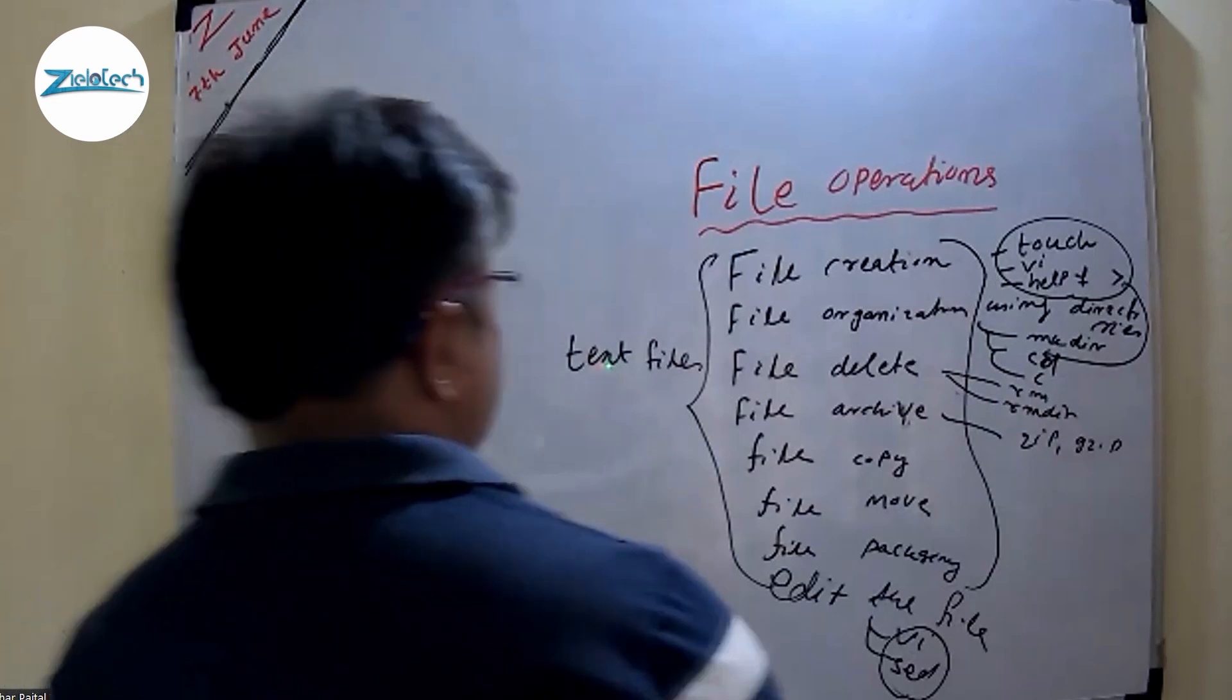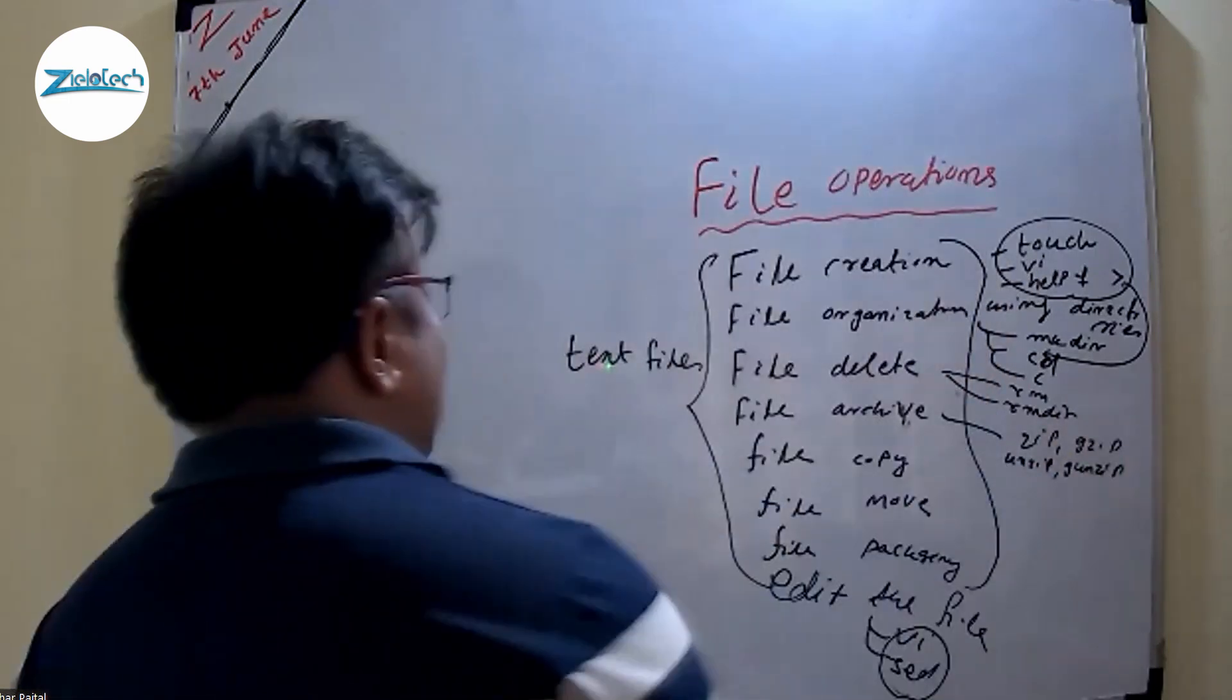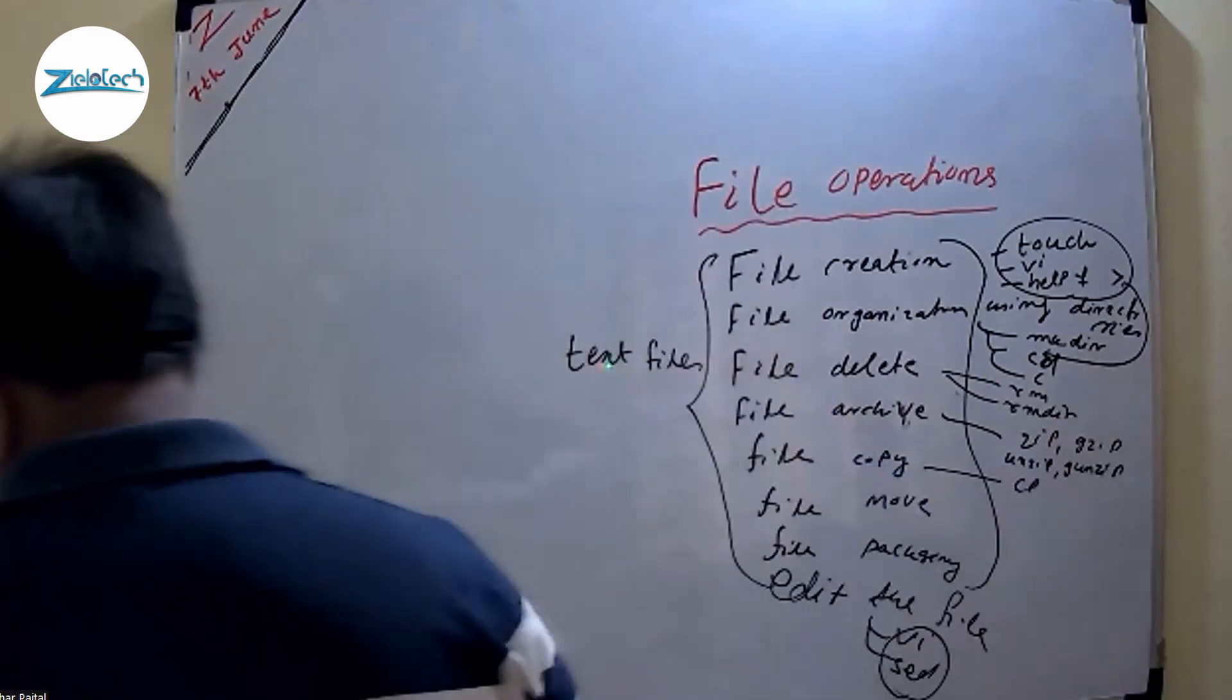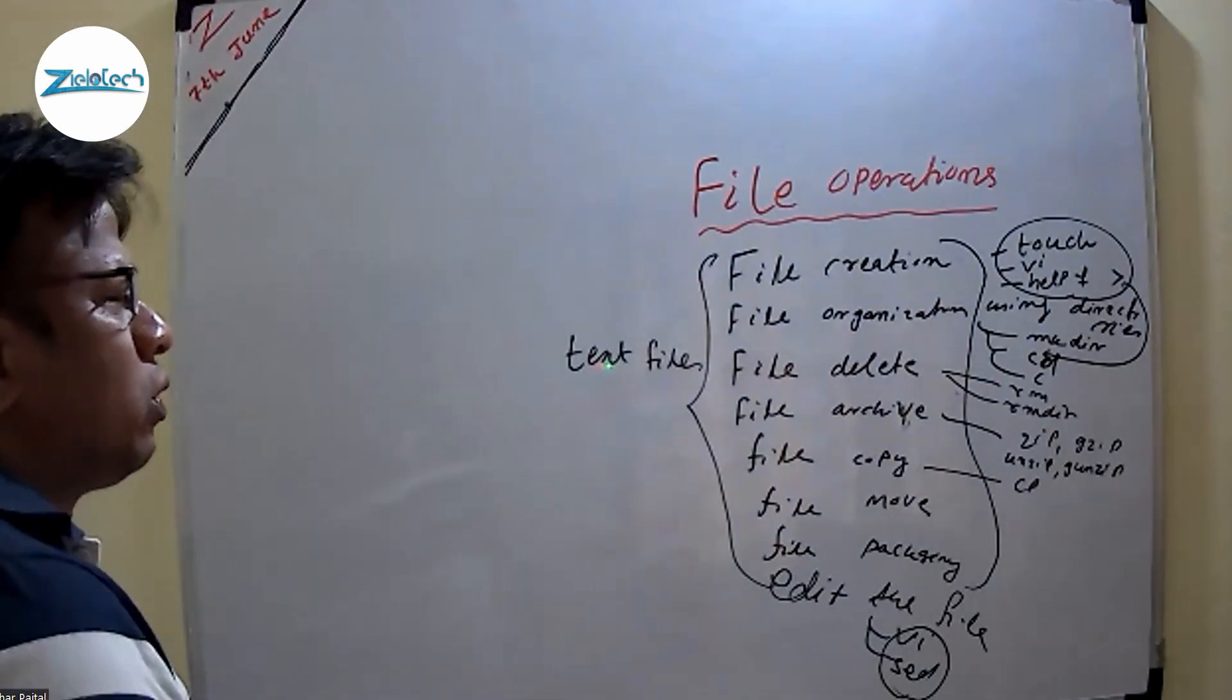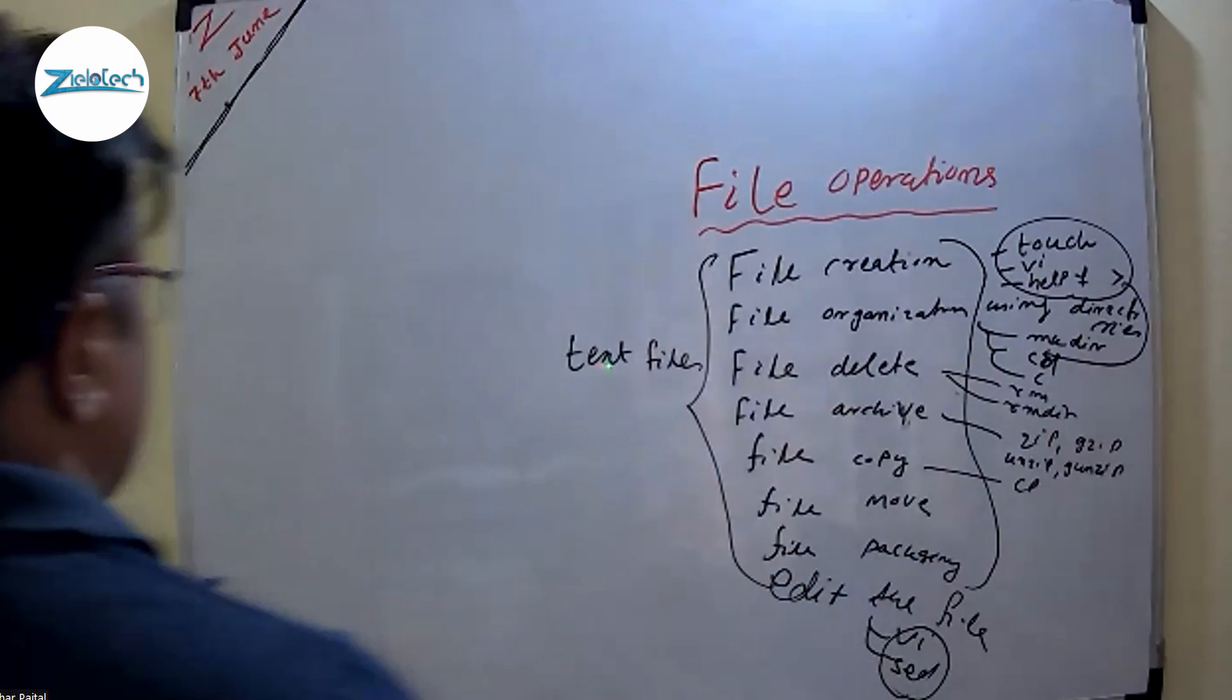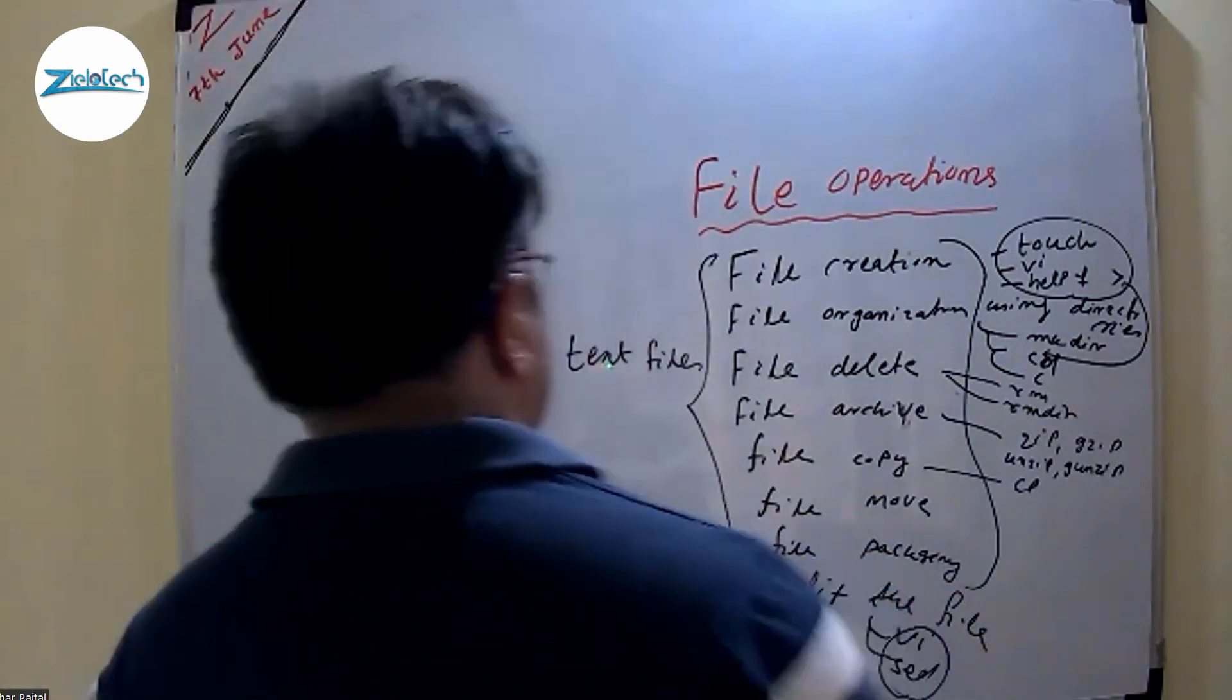File copy - the cp command. The cp command is used for copying one file from one location to another location, also to copy the content of a file into another file within the same location. So copy command is used to copying a file from one file to another file, from one folder to another folder. That is called cp.